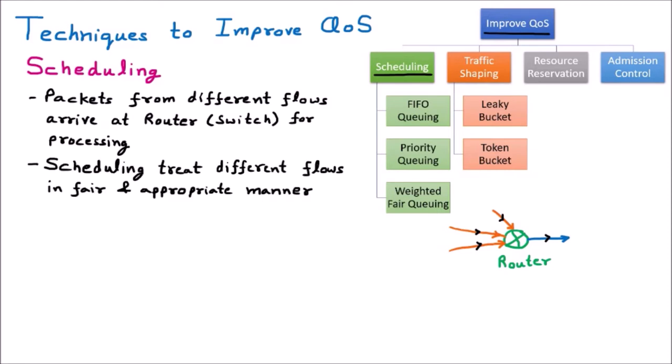Flows stand for data flows — Flow 1, Flow 2, and Flow 3 — and data is coming from these flows through the outgoing line. Scheduling provides everybody a fair chance. There are three types of scheduling to improve quality of service: FIFO queuing, priority queuing, and weighted fair queuing.